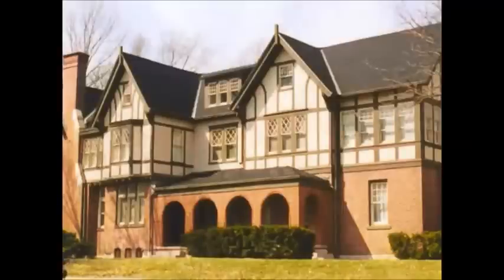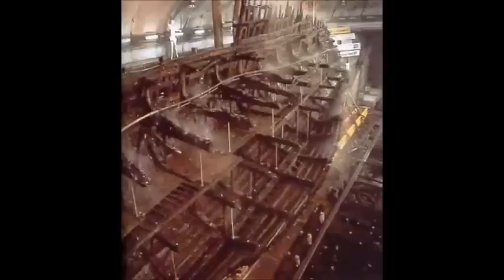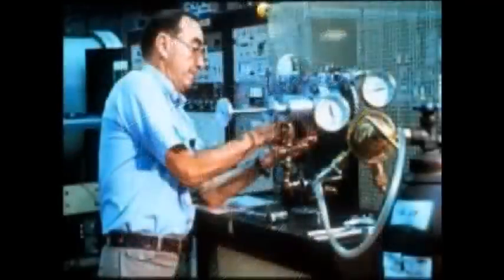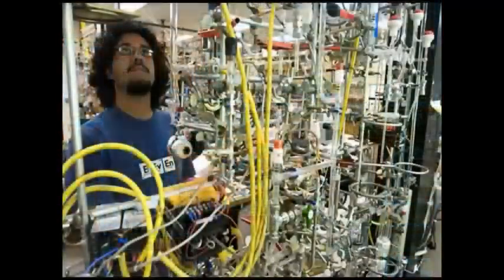Firstly, carbon dating can be checked against artifacts of known age, such as ship's timber. Secondly, it can be checked by sending the same artifact to different labs for analysis. Thirdly, let's take a sample of organic material from each of these layers. If carbon dating was random nonsense, you'd expect the chronological order of these samples to be all over the place. But that doesn't happen.